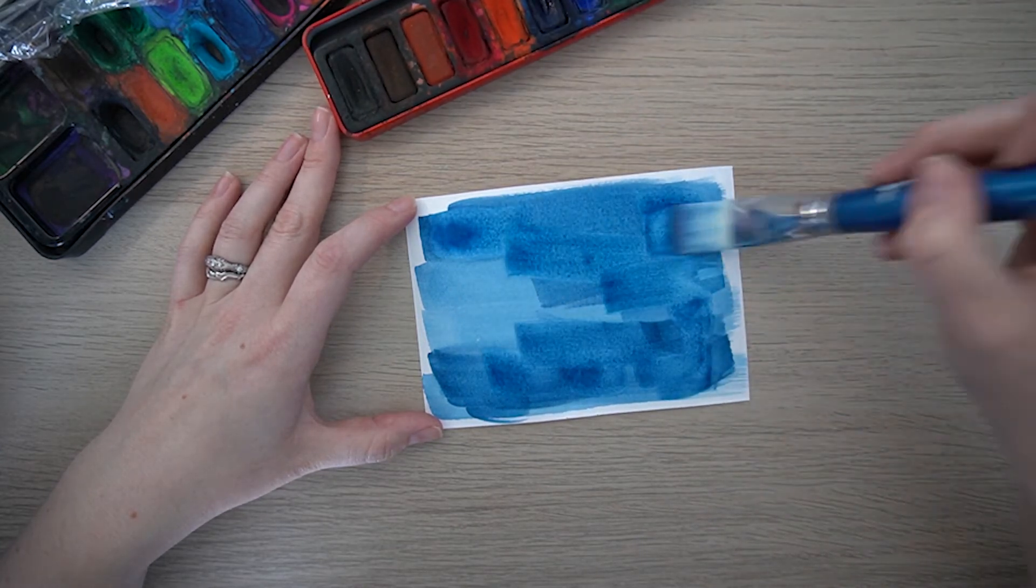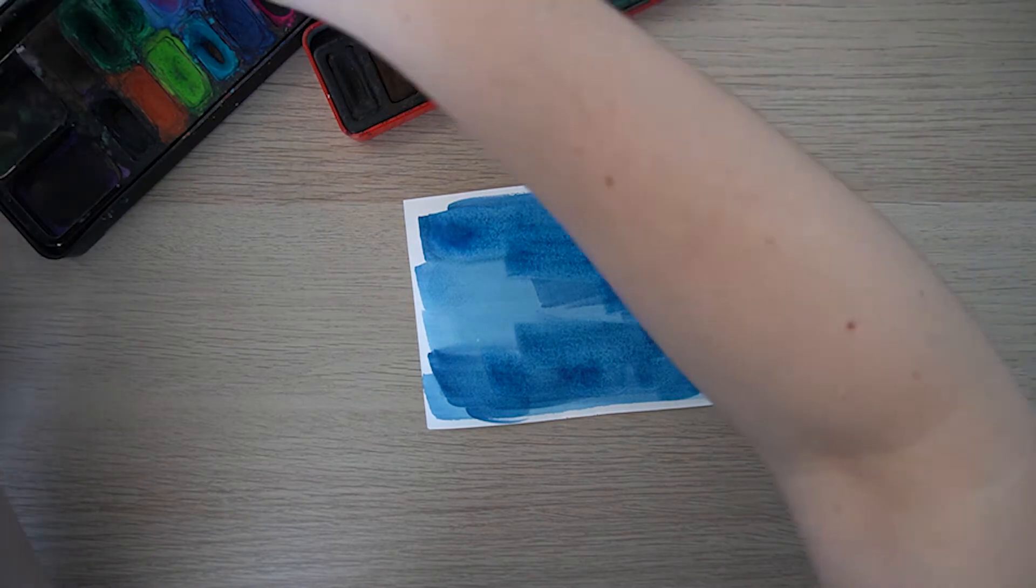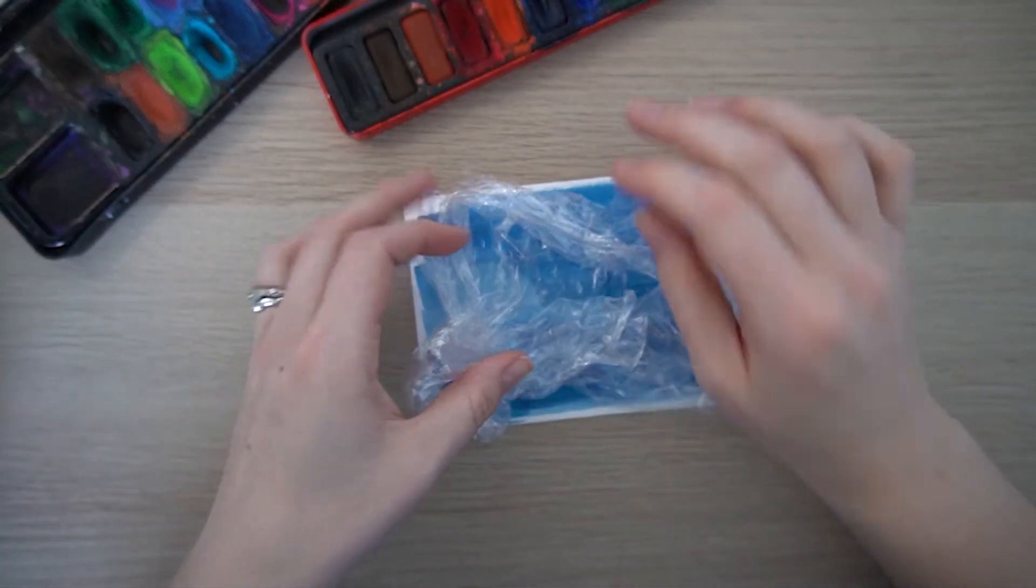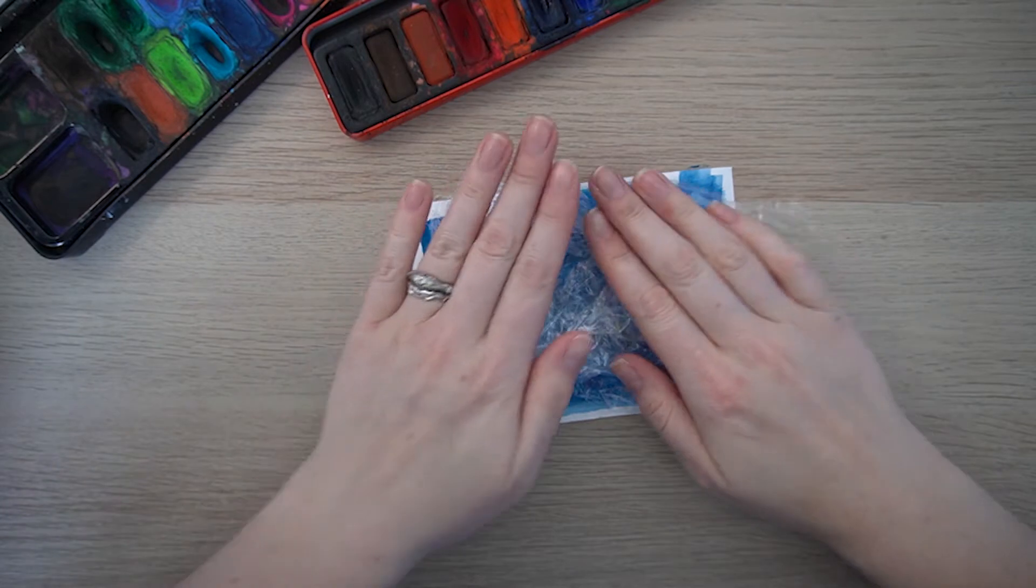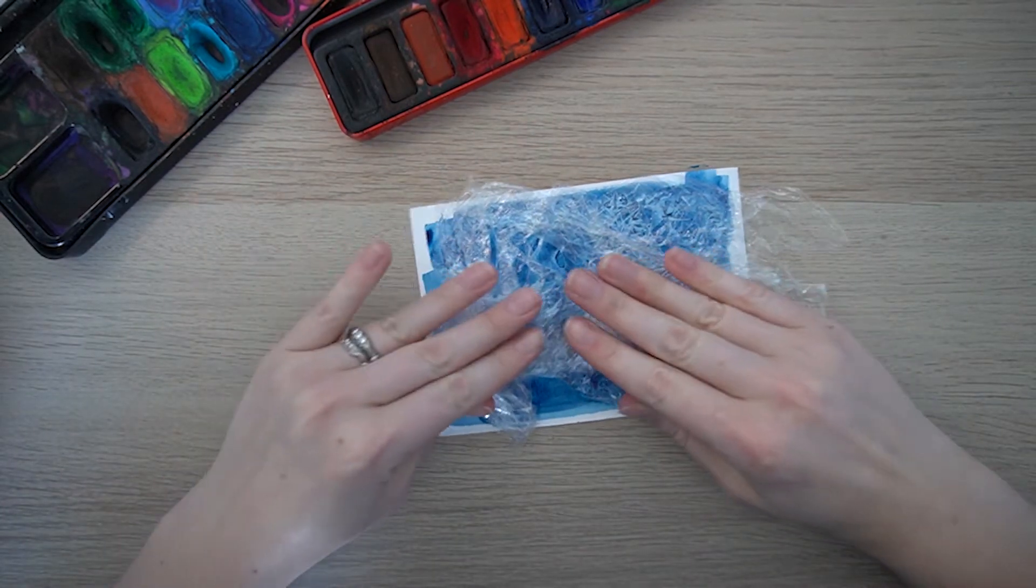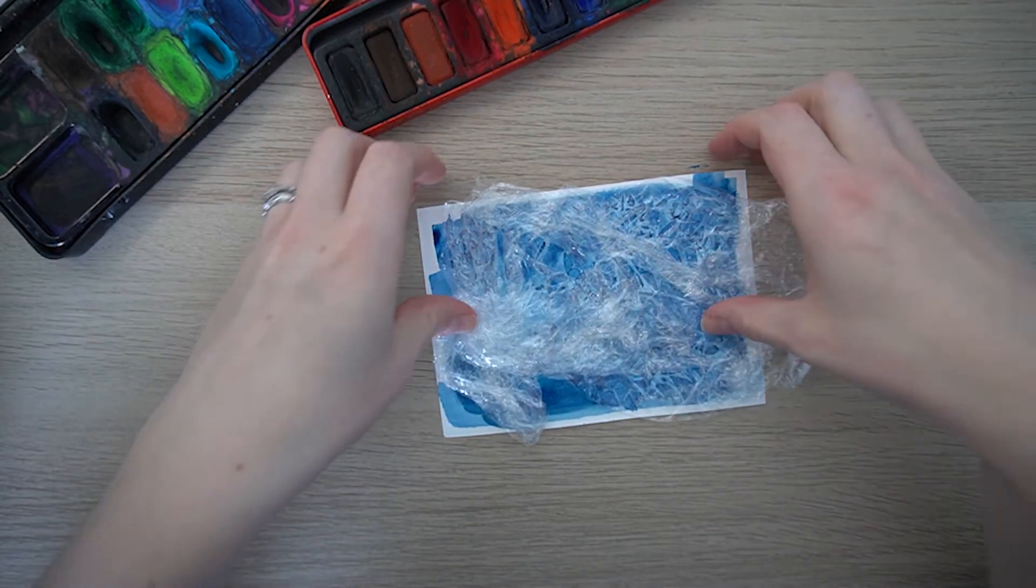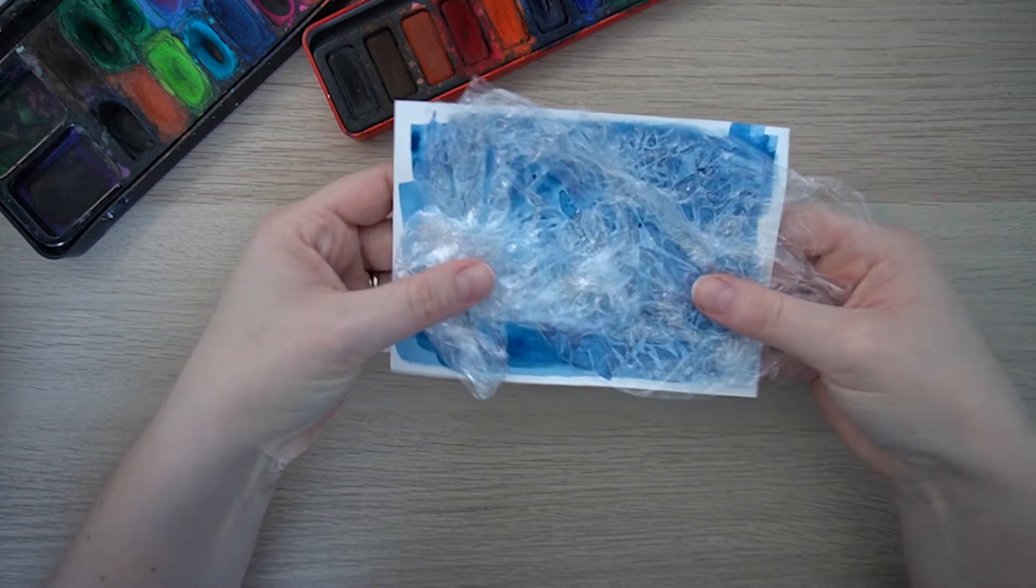Now you need to do this fairly quickly and then you can scrunch up your cling film and just press it down onto the top there. I'm just going to move that to the side and let it dry.